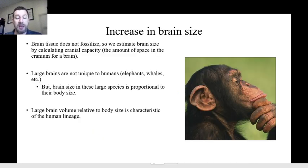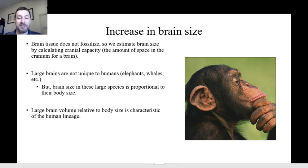There's an issue here, which is that brain tissue doesn't fossilize. We don't have any preserved brains from any of these species, so we have to estimate their brain size by looking at the cranial capacity — the amount of space inside the cranium — and assuming that that entire space is taken up by the brain, which is typical in all species.